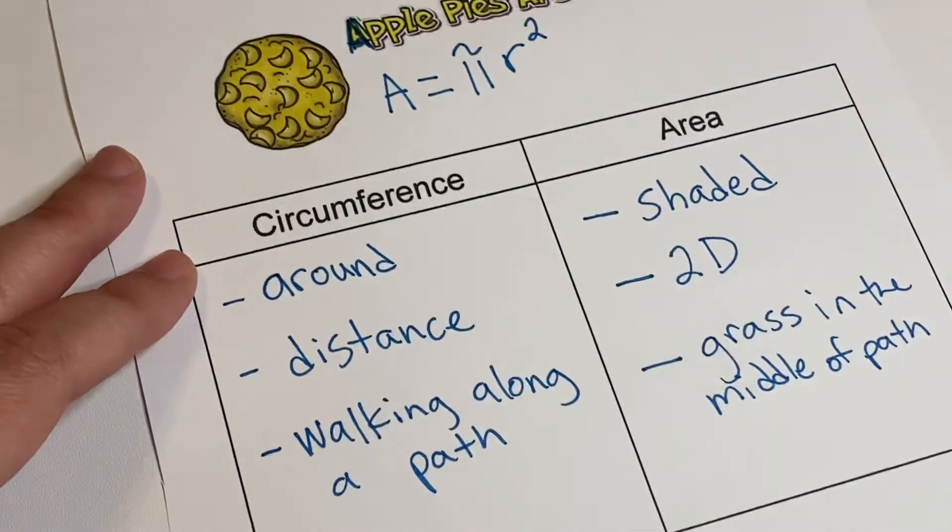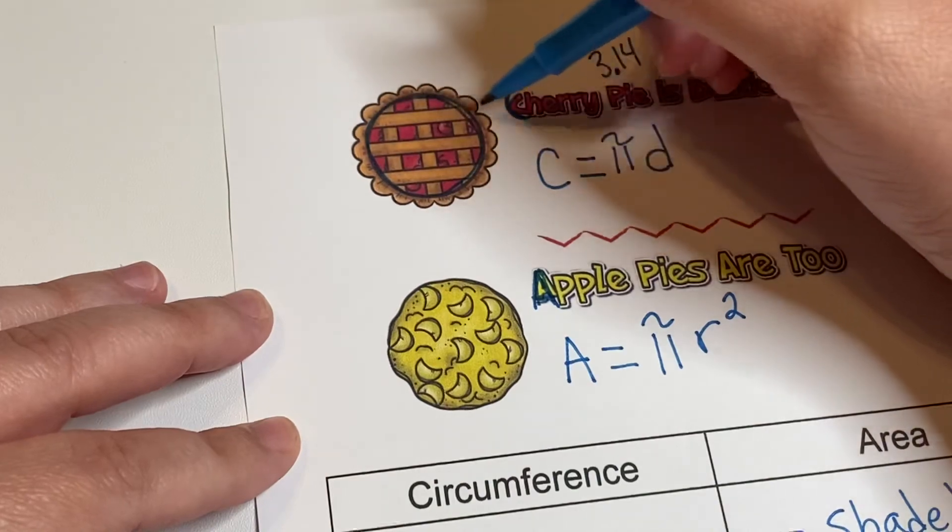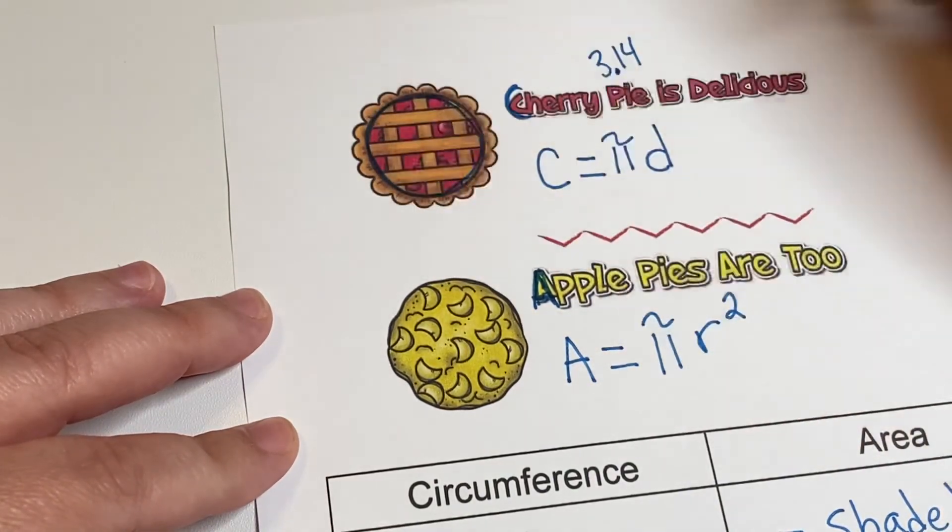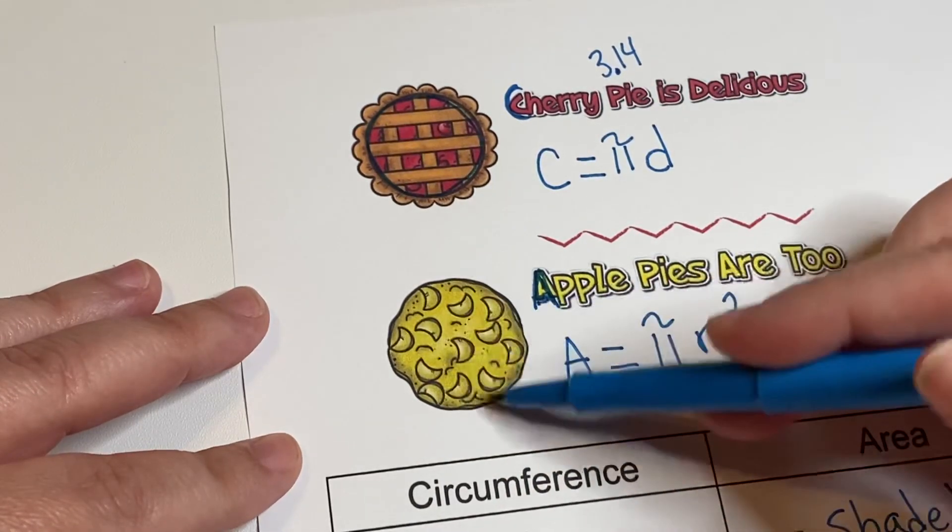And just if we even go back to the pie reminder here, this crust - if we were measuring the distance for the crust on the outside, that's the circumference. And the area would be this surface of the pie.